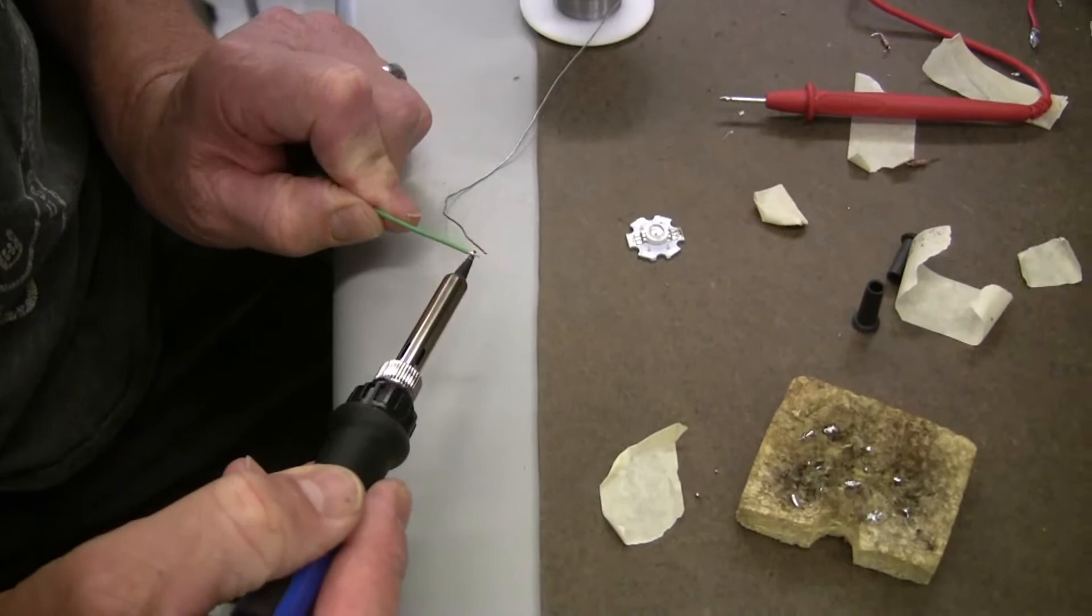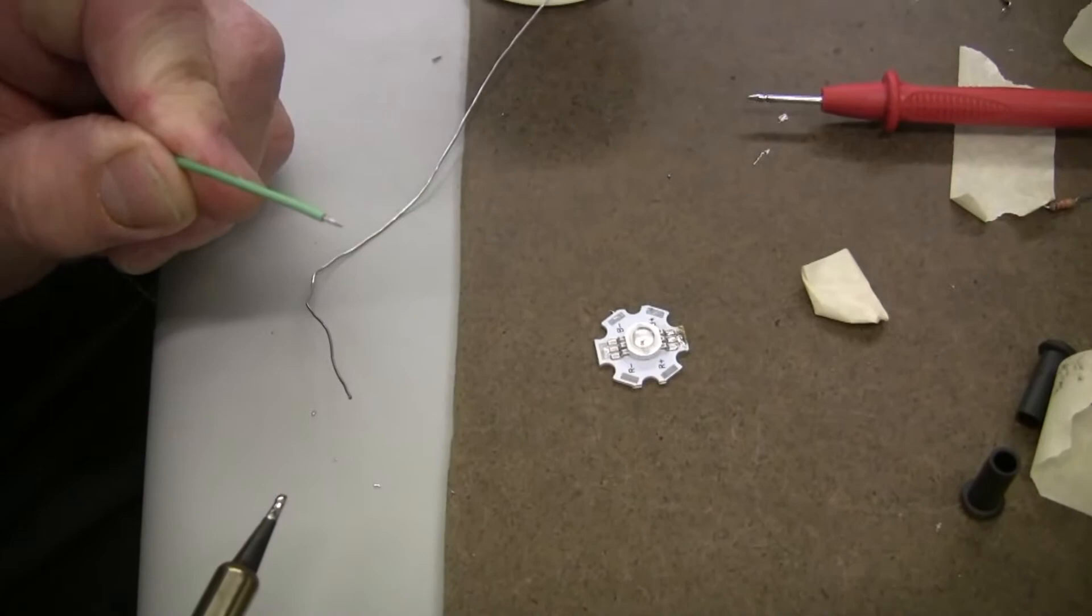little bit of solder to the tip of the iron, and then bring it together and apply a little bit of solder to the end of the wire. Now there's